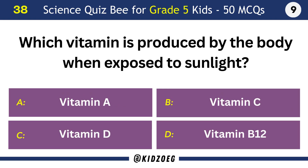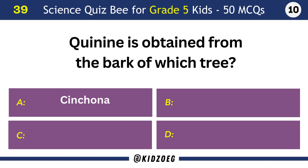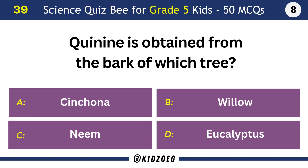Which vitamin is produced by the body when exposed to sunlight? Vitamin D. Quinine is obtained from the bark of which tree? Cinchona.